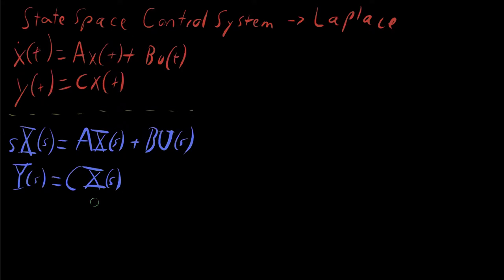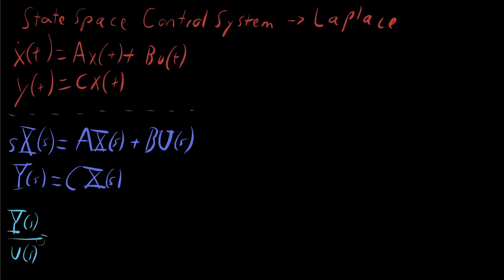Our goal is to find the transfer function of the control system in the state space representation. To do so, we're going to find an expression for Y(s) over U(s). If we figure out what that equals, then we have found the transfer function for the system. And once we know the transfer function for an LTI system, we know everything about the system — that's always the goal.